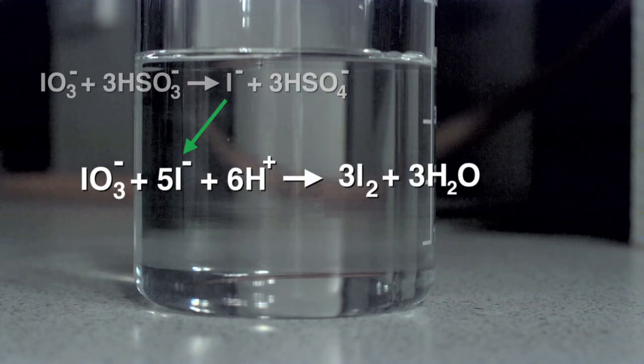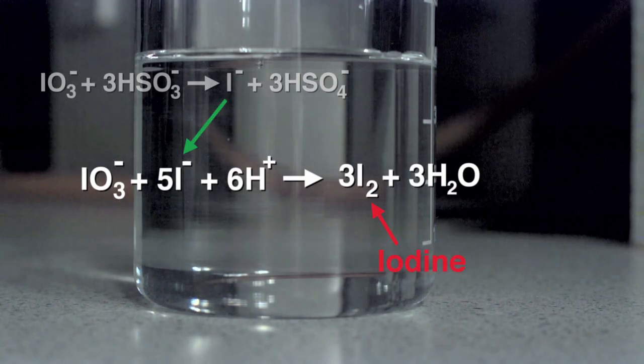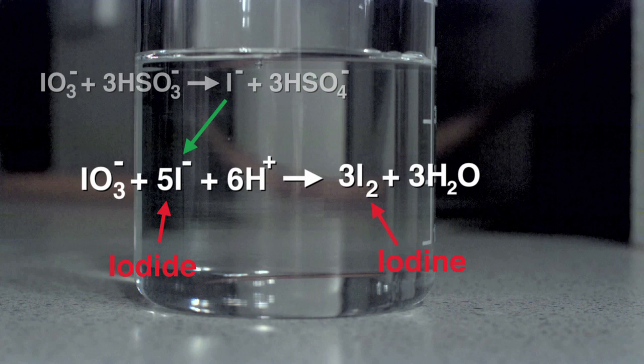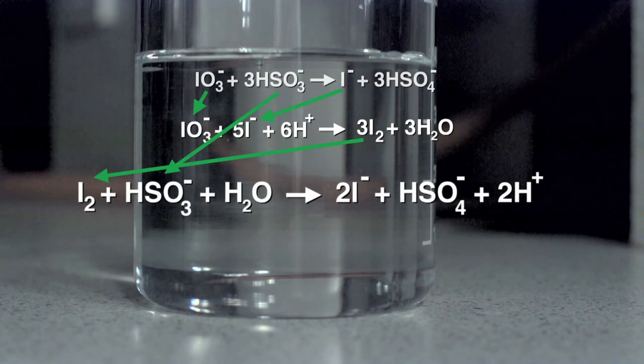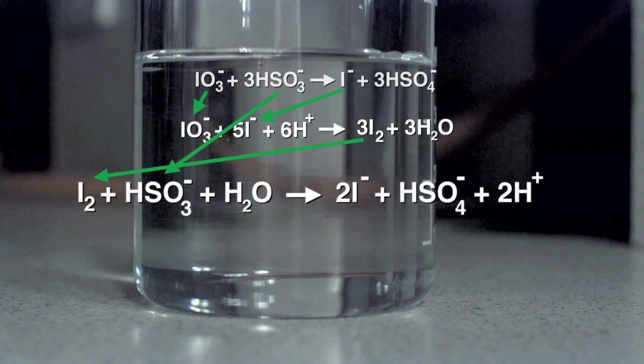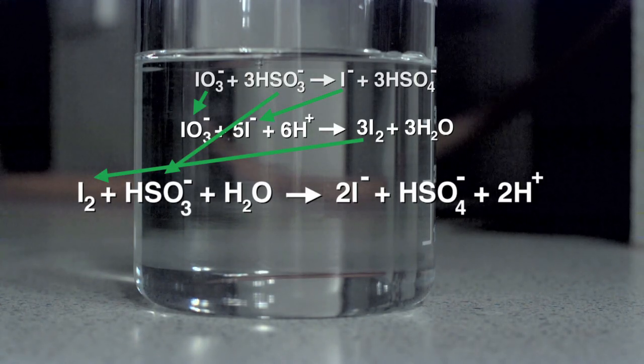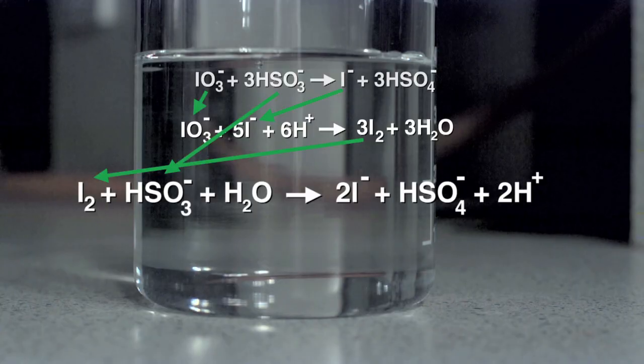So in the solution you have iodine and iodide, which should make the starch go blue. But before it can go blue, the bisulphite converts it back to iodide. So in the solution, in effect, you have iodate being turned into iodide and you're using up the bisulphite.